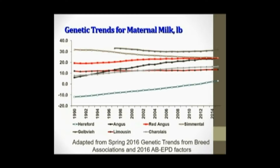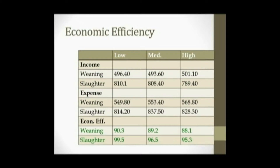These are genetic trends for milk, and again several breeds have chosen to increase this genetically over time while others have elected to stay relatively constant or slightly decrease. Milk is a nice example of a trait where extremes are problematic. In extreme forage-limited environments, cows with extreme genetic potential for lactation need more energy simply for maintenance because their visceral organ size is larger. That, coupled with the energy needed for lactation, means they may not have enough reserve left over for reproduction. Results from a study clustering animals into low, medium, or high lactation groups showed that the low milk group of cows were more economically efficient regardless of the marketing endpoint.